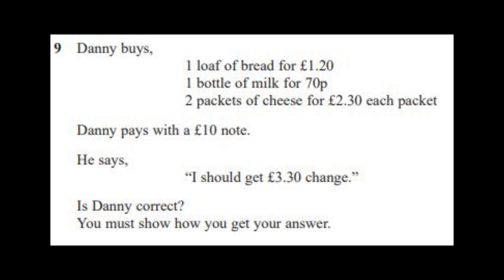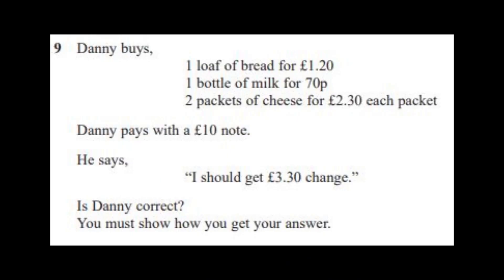Danny buys one loaf of bread for £1.20, one bottle of milk for 70p, two packets of cheese at £2.30 each. Danny pays £10. He says 'I should get £3.30 change.' Is Danny correct? So you do £1.20 plus 70p, you get £1.90, then add £2.30 twice — that's £6.50. Pays with a tenner, £3.50 change. So it's £3.50 not £3.30.